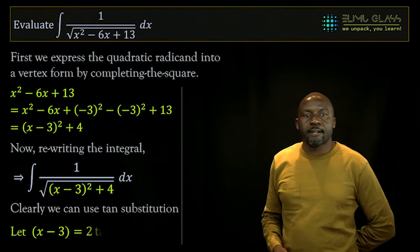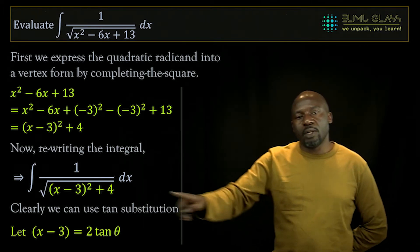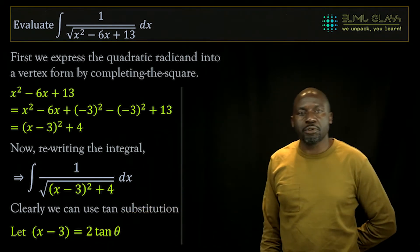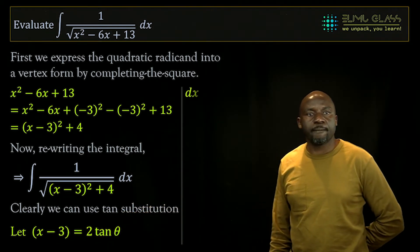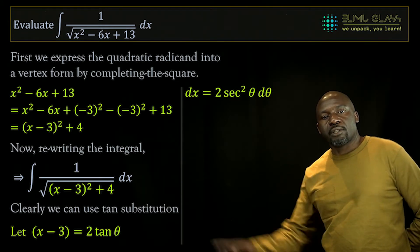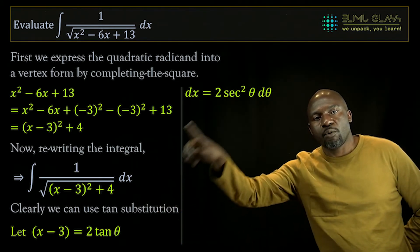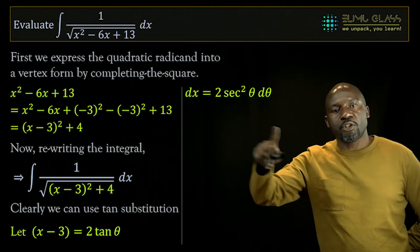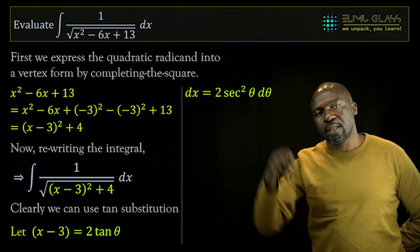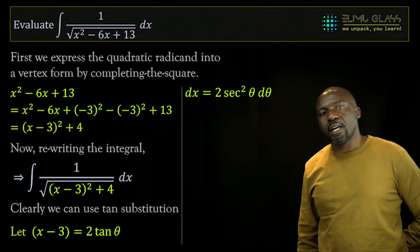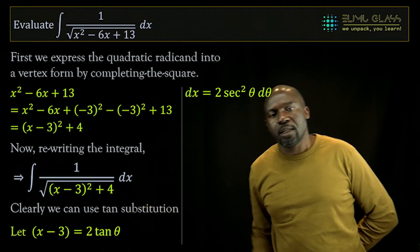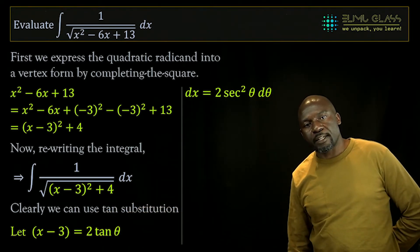If we do that and differentiate, we'll get dx. If we differentiate this side, we get dx, and differentiate this side, we get 2 sec squared of theta. So we have that, and we can now substitute this back. Where there is dx, I'll remove and put 2 sec squared of theta d theta, and where I see x minus 3, I will put 2 tan theta.